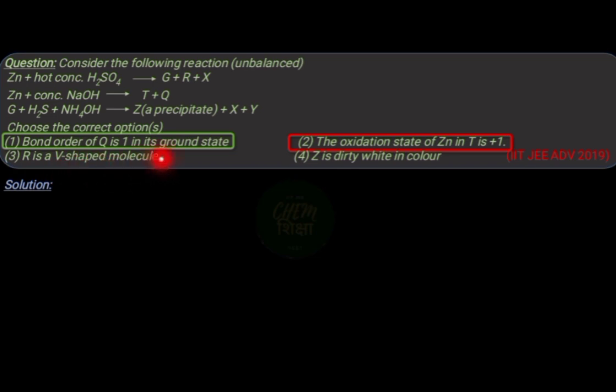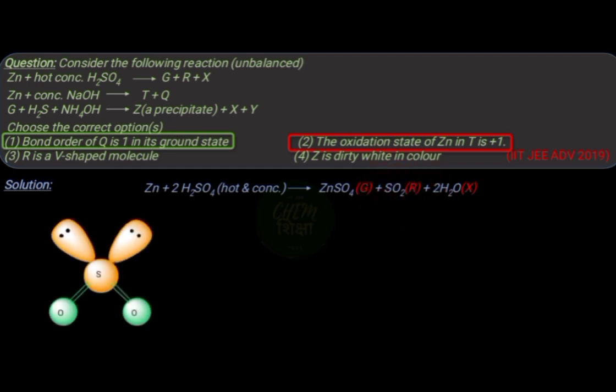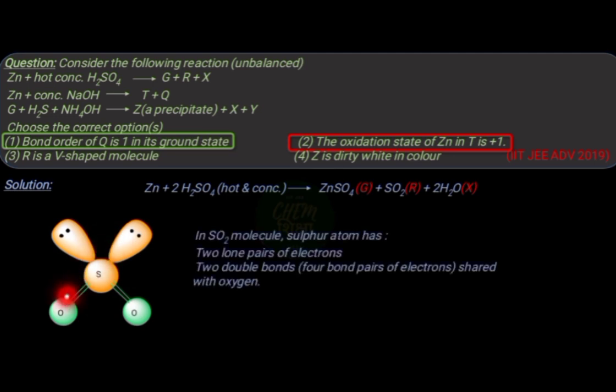Now consider option 3, in which we have to find out the shape of molecule R, that is sulfur dioxide. In sulfur dioxide molecule, the central atom is sulfur, which has two double bonds shared with two oxygen atoms and two lone pairs of electrons.